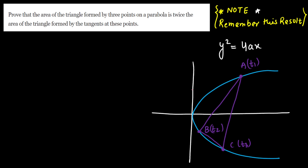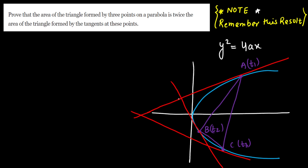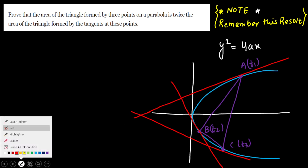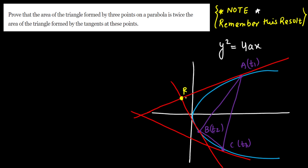Let us draw the tangents: tangent at A, tangent at B, and tangent at C. By intersecting these tangents we get three points of intersection. Let us call them P, Q, and R. So we are getting an outer triangle PQR formed by the tangents, and an inner triangle ABC formed by joining the three points on the parabola.